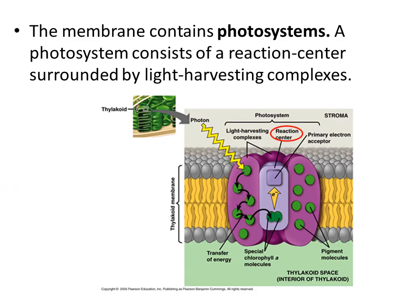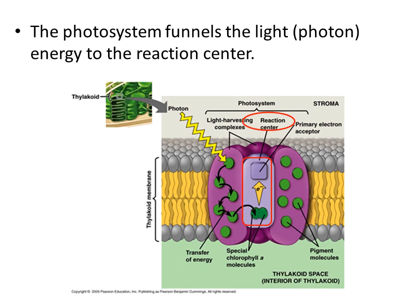The thylakoid membrane contains a component called a photosystem. Inside of that membrane you have photosystem 1 and photosystem 2, along with many other protein complexes. A photosystem consists of a reaction center that will be surrounded by light harvesting complexes. In this image, the purple structure is the photosystem and it surrounds a lavender structure called the reaction center.